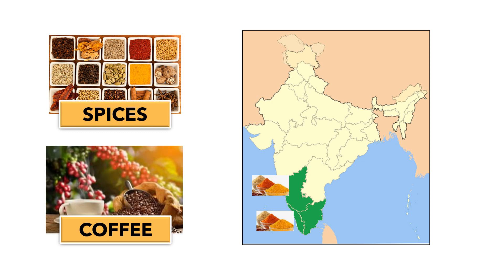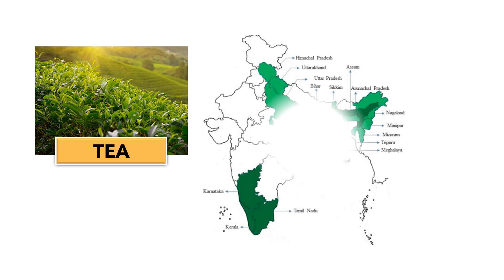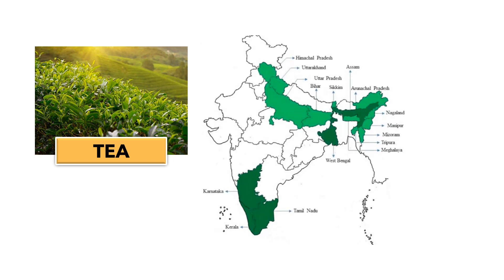Coffee is mainly grown in Karnataka, Kerala and Tamil Nadu. India is the second largest producer of tea in the world. Tea grows best in hilly areas with abundant rainfall. It is mainly grown in the hilly regions of Assam, West Bengal, Tamil Nadu and Kerala.